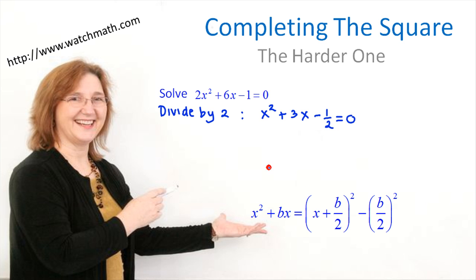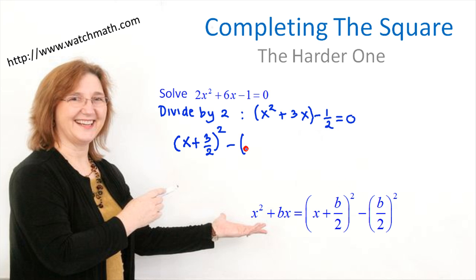We apply the identity to x squared plus 3x. This says x squared plus 3x equals x plus half of b, squared, minus half of b squared. In this case, b is positive 3, so half of b is 3/2. So we write x plus 3/2 squared minus 3/2 squared.